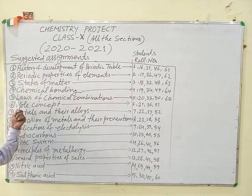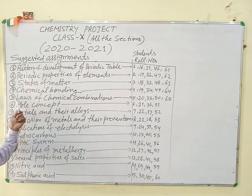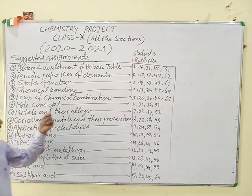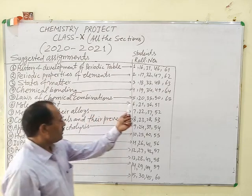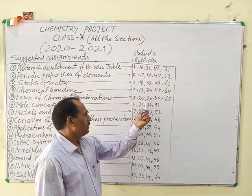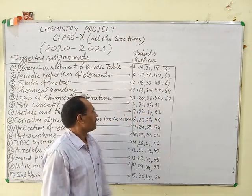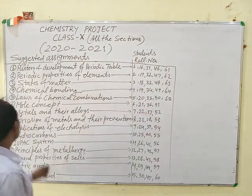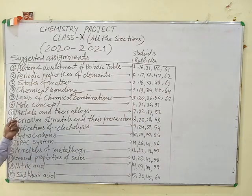Laws of chemical combinations is for roll numbers 5, 20, 35, 53 and 65 as well.